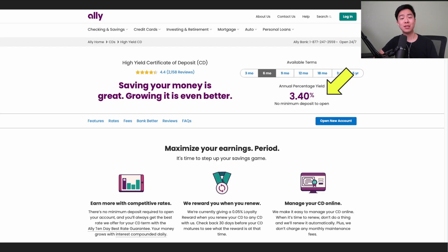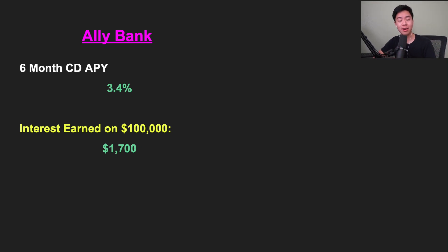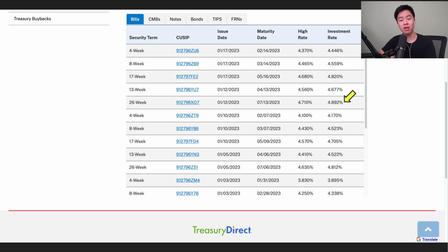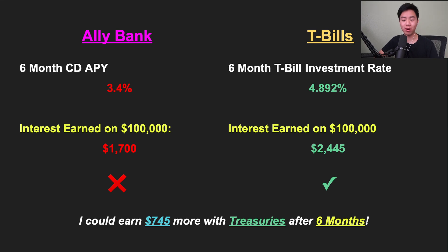For example, a 6-month CD with Ally Bank is currently yielding 3.4% APY. So if I were to deposit $100,000 into this Ally Bank CD, I would earn $1,700 of interest after 6 months. However, I can also buy a 26-week T-bill on Treasury Direct, which offers a much higher rate at 4.89%. With that same $100,000 deposit, I could earn $2,445 — that's $745 more interest, and that doesn't even account for the additional state and local income tax savings that come with Treasury bills.